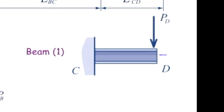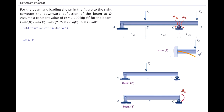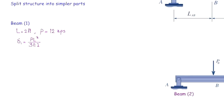Beam number one under load P deflects downward; the value of deflection is called delta one. We go to the table to pick up the value. Delta one equals PL³ over 3EI, where L is the length of the cantilever beam, which is two feet.